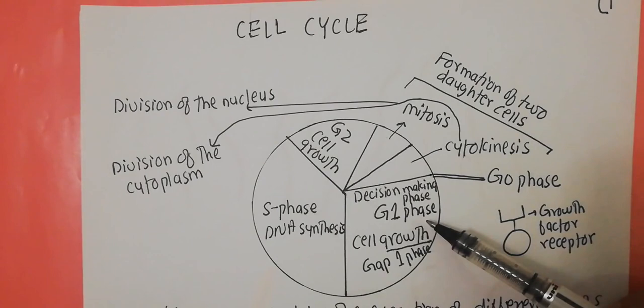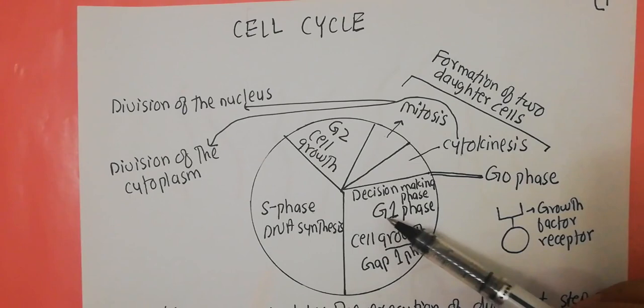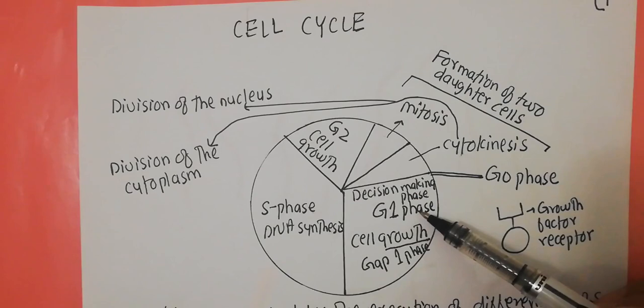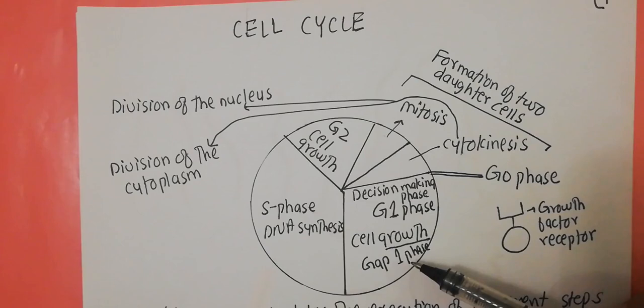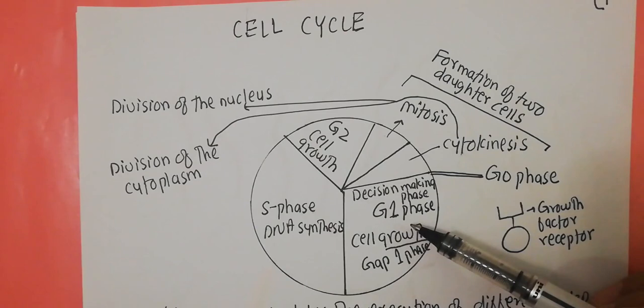Usually the first phase of the cell cycle that is known is the G1 phase, also called the growth one phase. In some literature you will find that this G1 phase is also called the gap one phase. However, that terminology is not ideal, because 'gap' usually refers to some sort of inactivity.